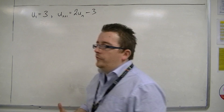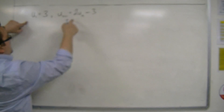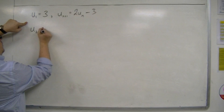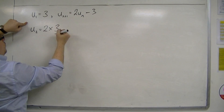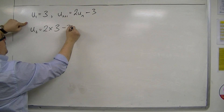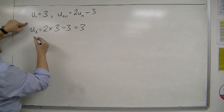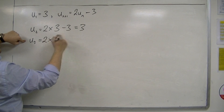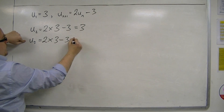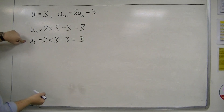Now let's see what sequence this generates. If I put u1 = 3 into this, then u2 is two lots of u1 take away 3, so 6 take away 3 is 3. So u3 is two lots of 3 take away 3, which is 3, and so on and so forth.